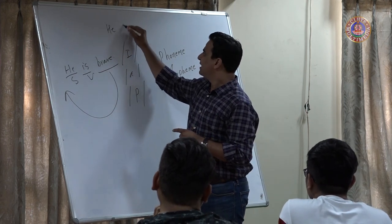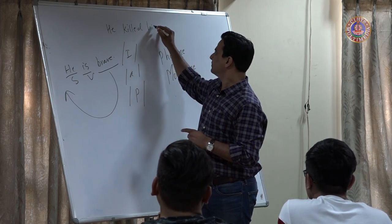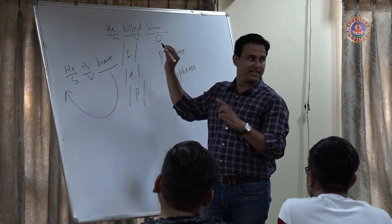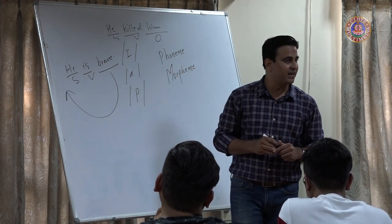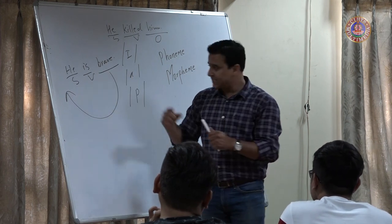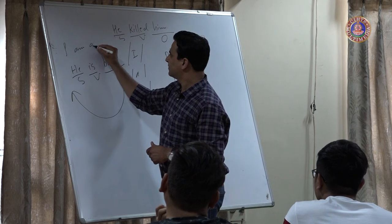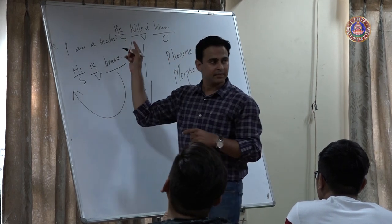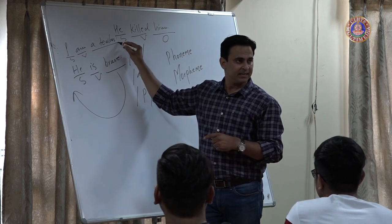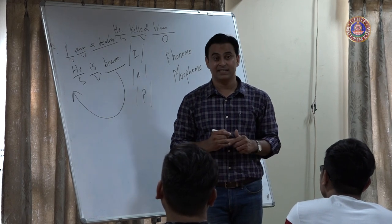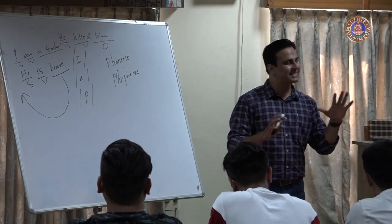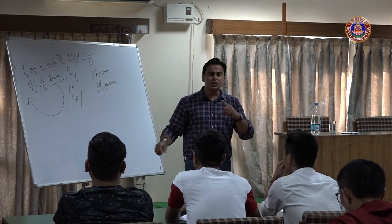Compare: 'he killed him' — subject, verb, object. You can make a passive: 'he was killed by him'. But 'I am a teacher' — subject, verb, and what follows is not an object. You cannot make a passive of that. We'll have a separate lecture on syntax and sentence structure, but this matters now because whatever you do in English class, you must know the nature of a word — partly because it is related with phonetics.